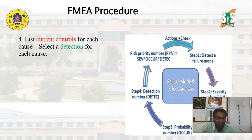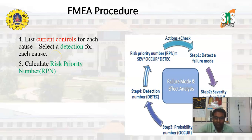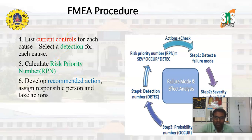The next steps in FMEA analysis involve detecting the failure mode, identifying all potential causes of failure, and controlling those causes. We also need to select the detection level for each cause. The following step is to calculate the Risk Priority Number, that is RPN. Finally, we develop the recommended action, assign a responsible person, and take action.